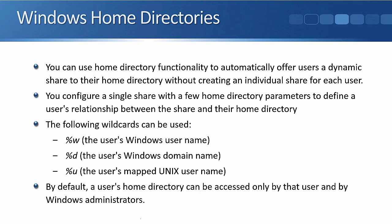The wildcards available are: %W for the user's Windows username, %D for the domain name, and %U for the user's mapped Unix username. By far the most commonly used wildcard is %W. By default, a user's home directory can be accessed only by that user and by Windows administrators, which is typically the desired behavior — though this can be changed. The easiest way to understand Windows home directories and how the wildcards work is by seeing it in the lab, so a demo will be provided.